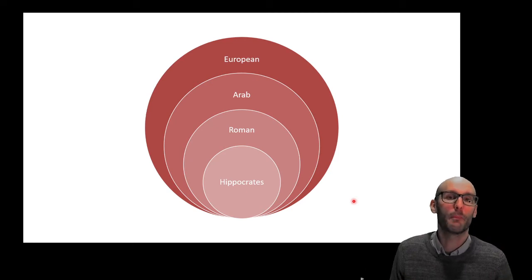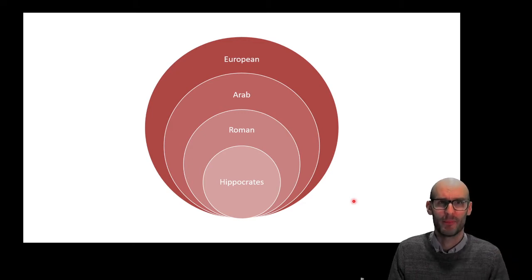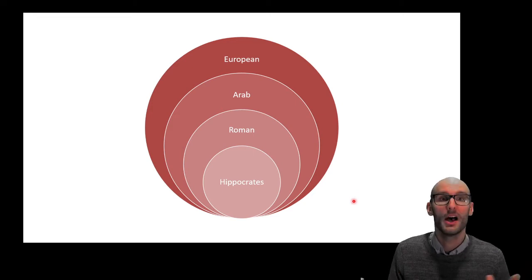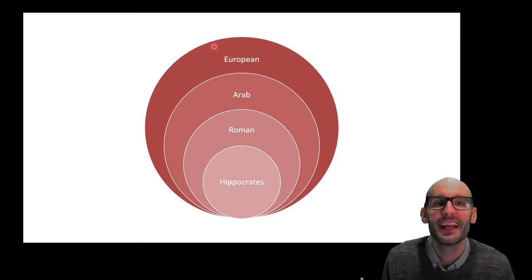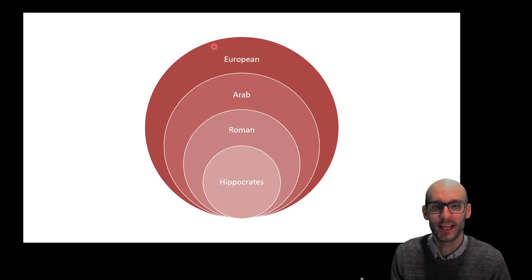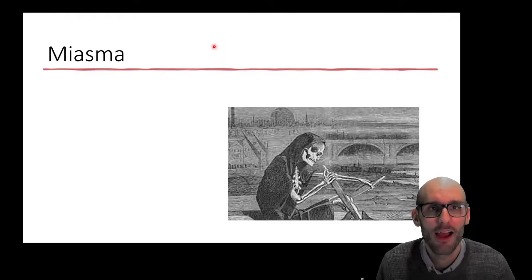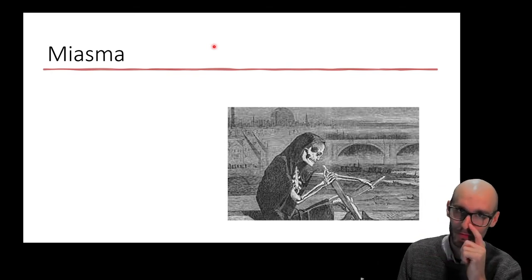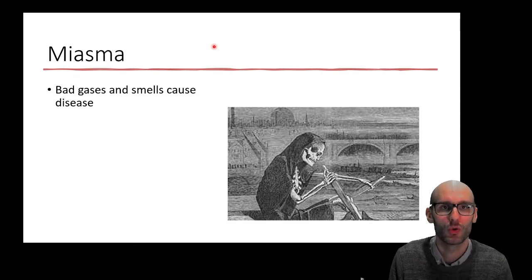Hippocrates' ideas were built on by different authors throughout those 2,000 years — Roman authors like Galen, who changed it a lot, and Arab authors, who wrote the textbooks that spread throughout Europe on medicine. Later European authors changed and modified it further. One of the main ways they modified Hippocrates' ideas was miasma. Galen, the Roman, was very much in favor of this — and miasma is the idea that bad gases and smells cause disease.